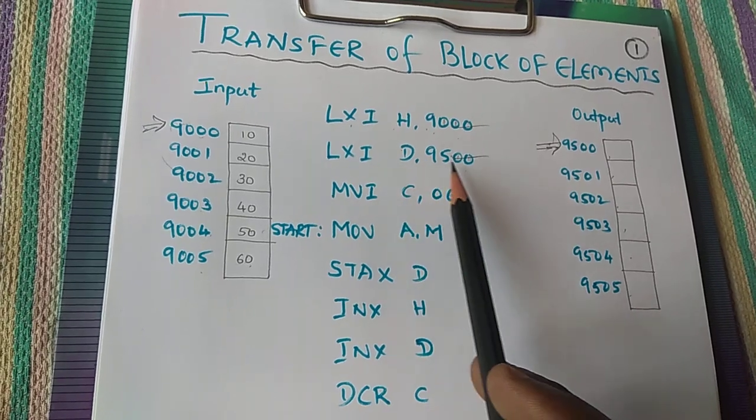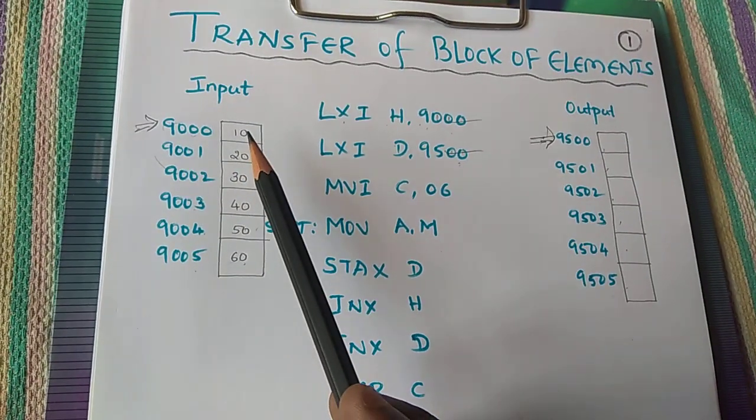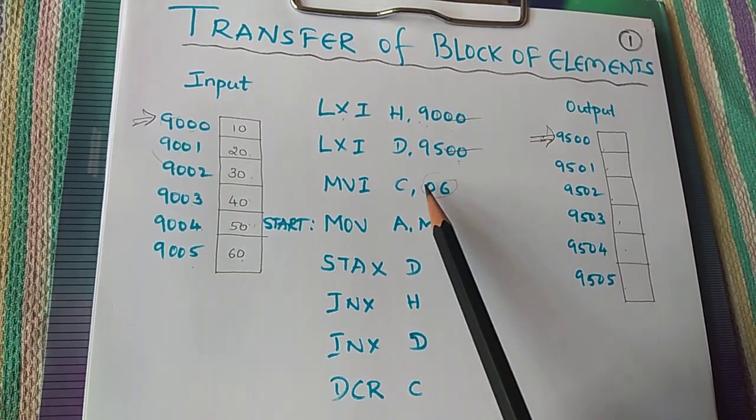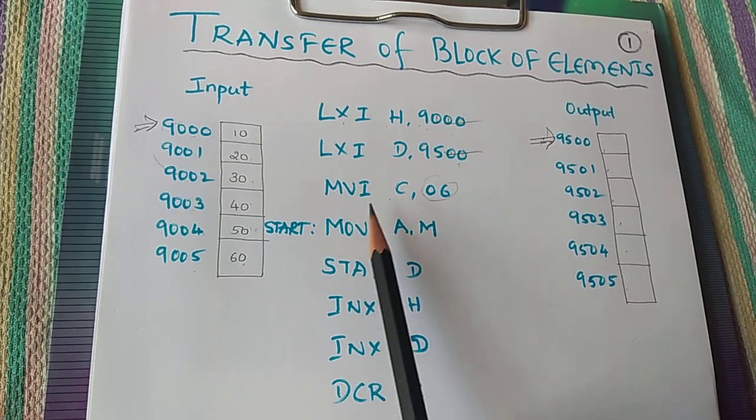So let us have the counter. How many numbers we are supposed to transfer? One, two, three, four, five, six. That is what MVI C comma 06. So 06 will be stored in C.